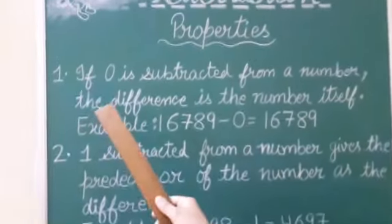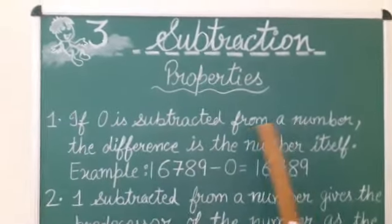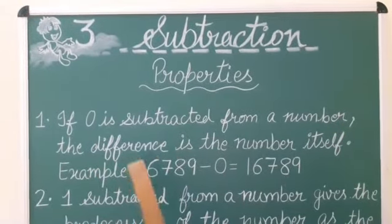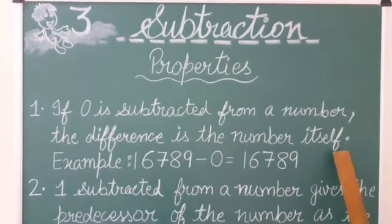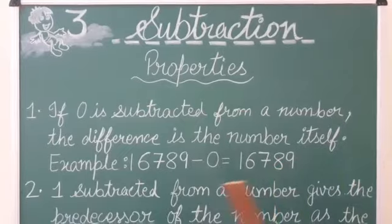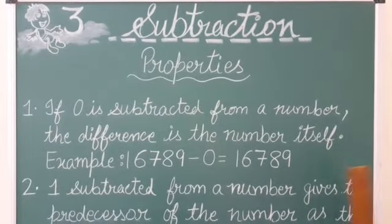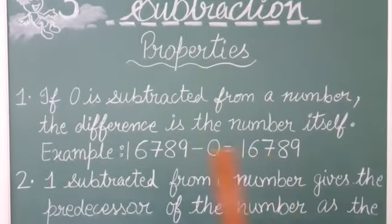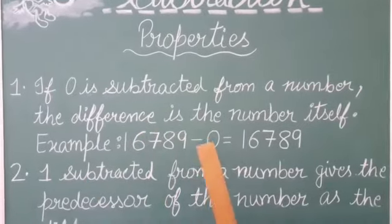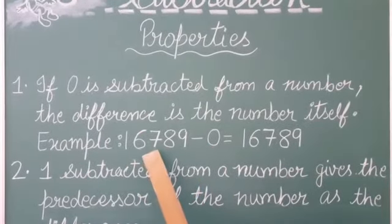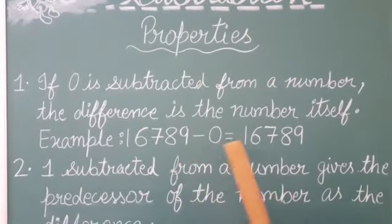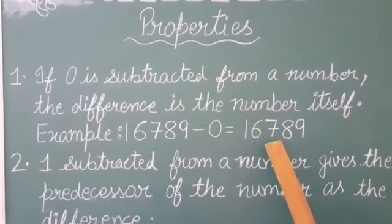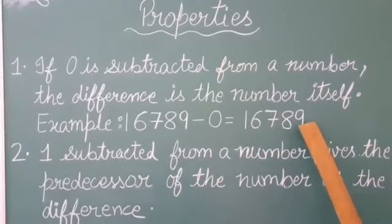First property: if 0 is subtracted from a number, the difference is the number itself. This means when we subtract 0 from a given number, the answer is the number itself. For example, when we subtract 0 from 16,789, we get the answer 16,789—the number itself.